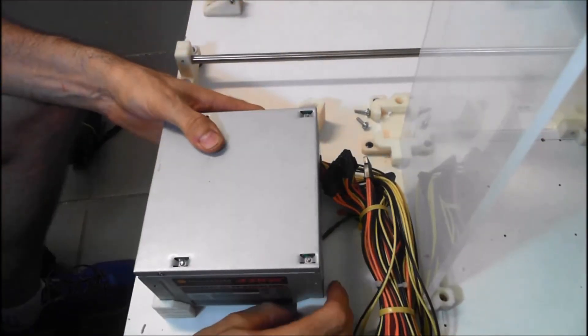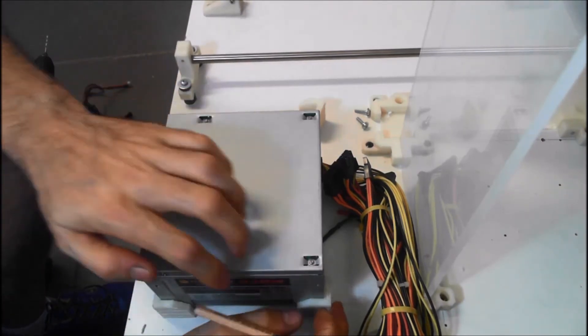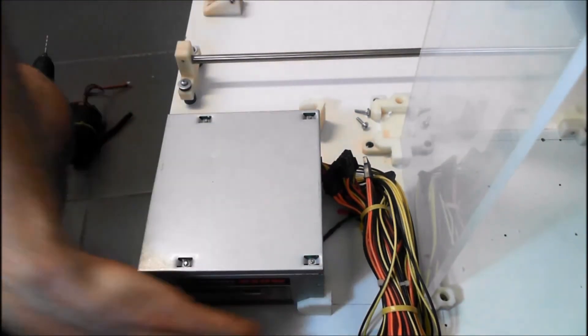Put the power supply back on and we'll do the back corner next. Again just mark a little line on the back of the connector. Power supply out.